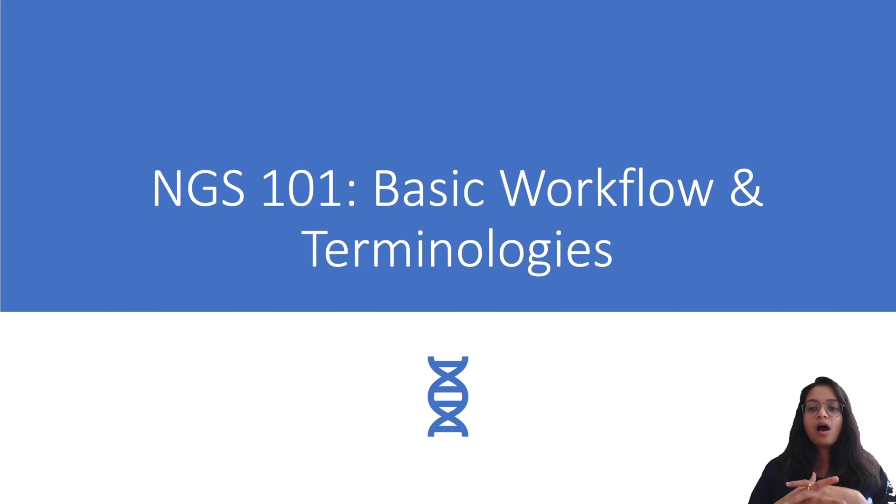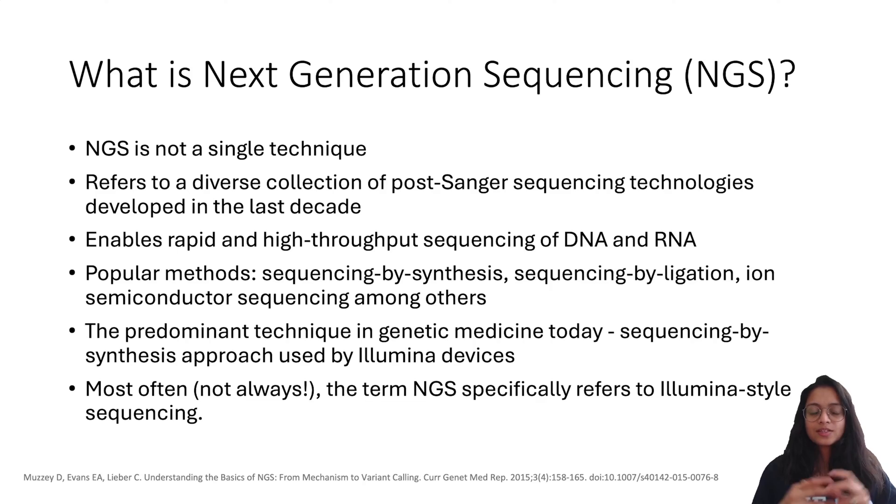Next generation sequencing is not a single technique, rather it refers to a diverse collection of post-Sanger sequencing technologies which enables rapid and high throughput sequencing of DNA and RNA. The most commonly used method for sequencing today is sequencing by synthesis, which is performed by Illumina devices. Most often, the term next generation sequencing specifically refers to Illumina style sequencing.